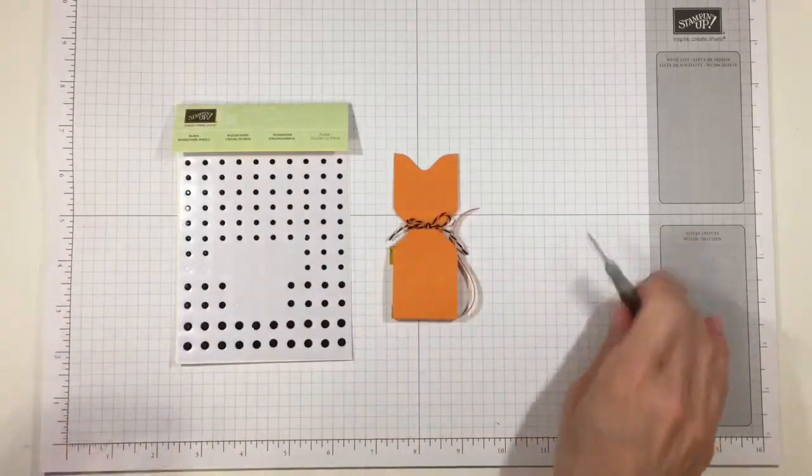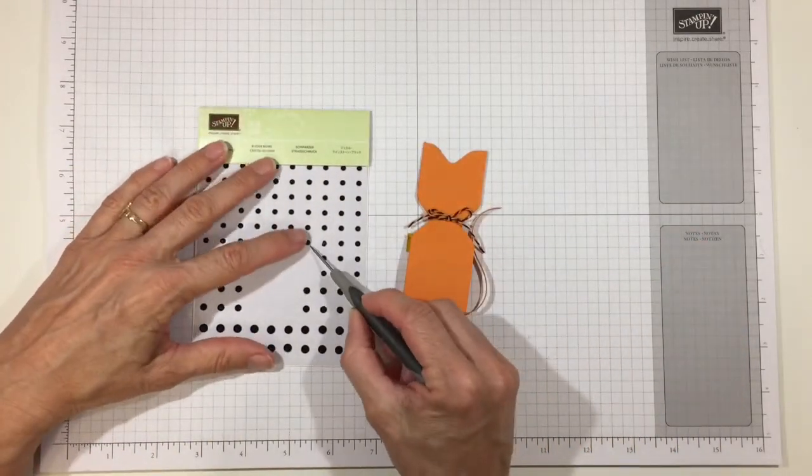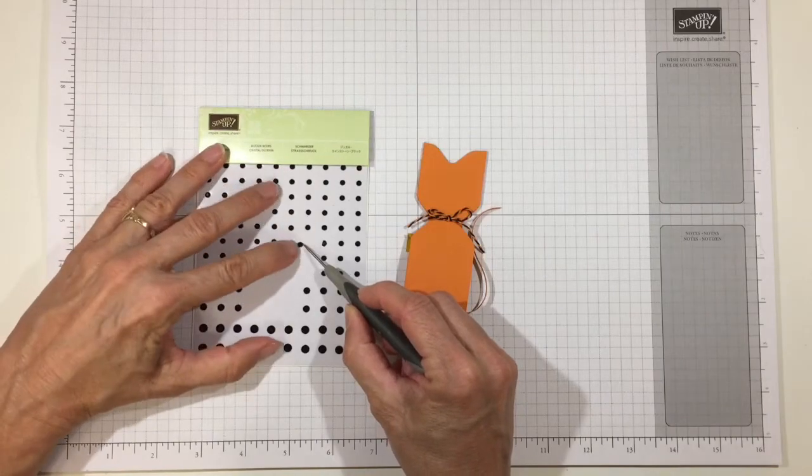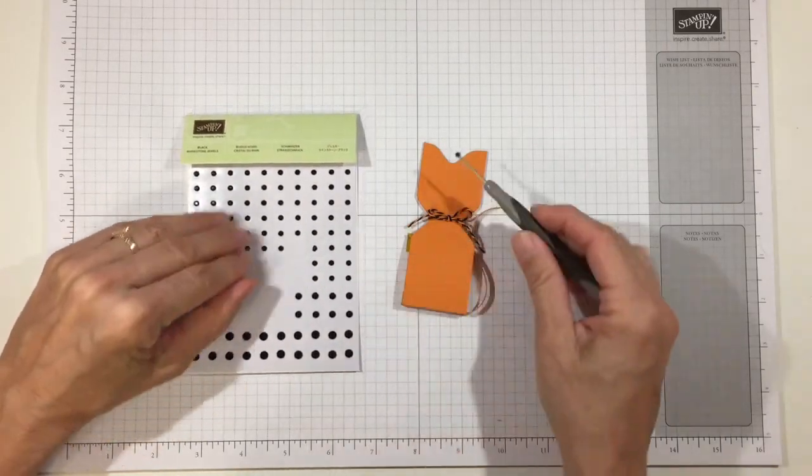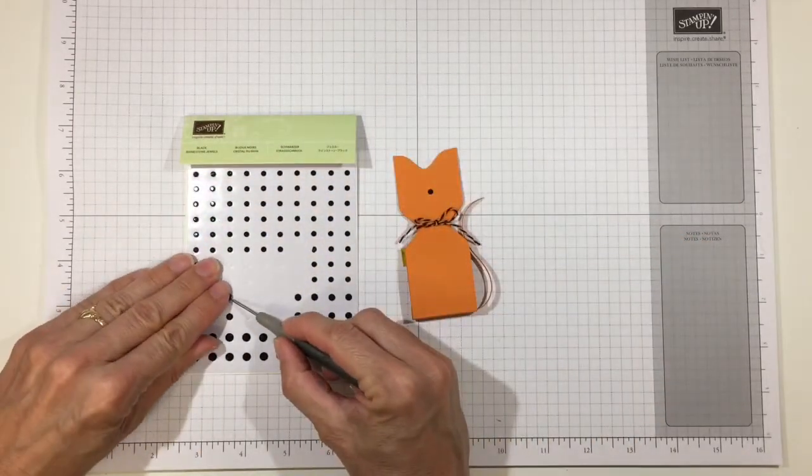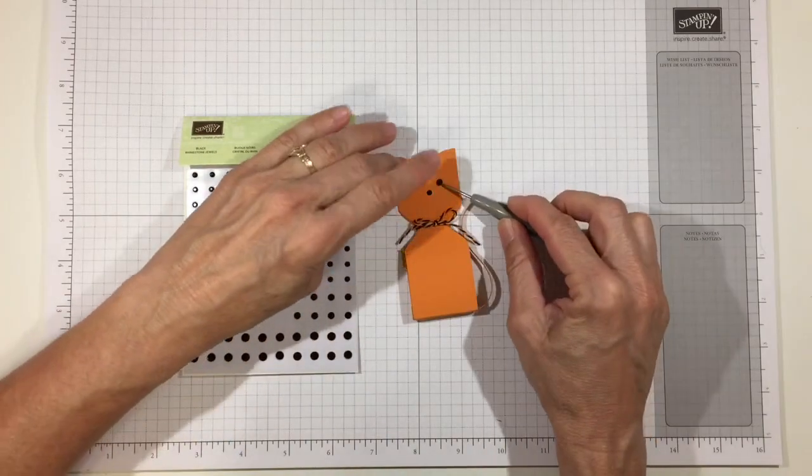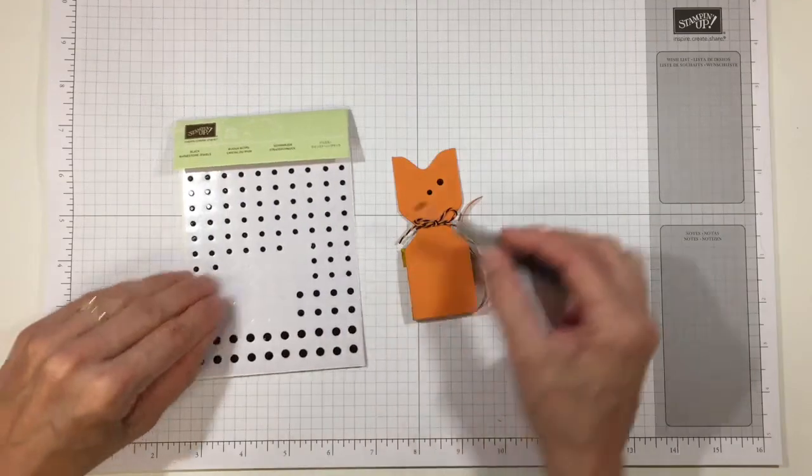I'm going to use some of the rhinestones from Stampin' Up, the black rhinestones. What I did was I took one of the smaller ones for his nose. I put it right in the center of the face and that way I knew where to put the eyes. And I used some of the bigger ones for his eyes on some of them, and I used some smaller ones on others, so whatever you like to do with a face go ahead and do that.